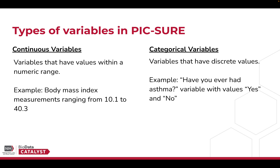There are two types of variables in PICTURE: categorical and continuous variables. Continuous variables refer to any variables that have a numeric range of values. For example, body mass index with a variable range from 10.1 to 40.3 is a continuous variable. Categorical variables refers to any variables that have categorized or discrete values. For example, 'have you ever had asthma' with values yes and no is a categorical variable. Note that the internal PICTURE data load process determines the type of each variable based on the data. Though the process for applying a filter to each type of variable differs slightly, the PICTURE interface makes it easy to build your cohort.